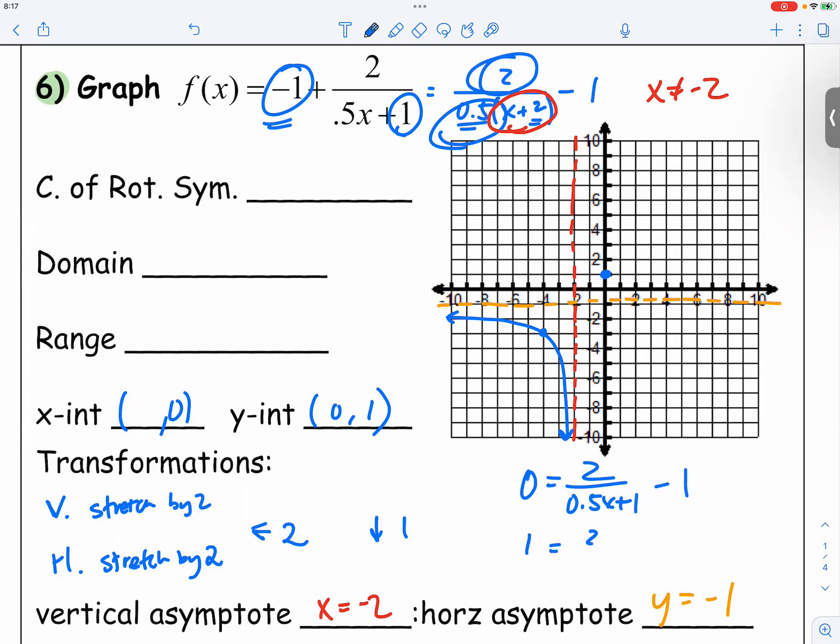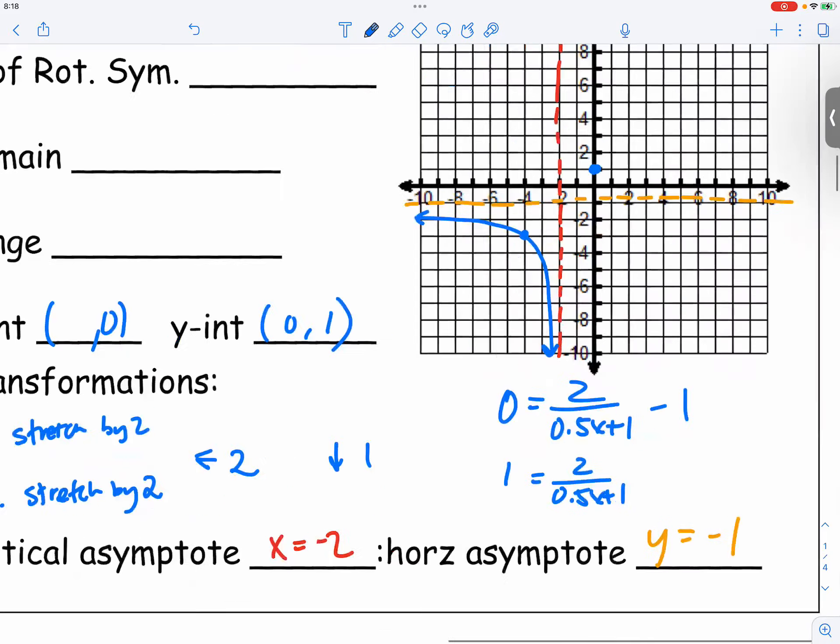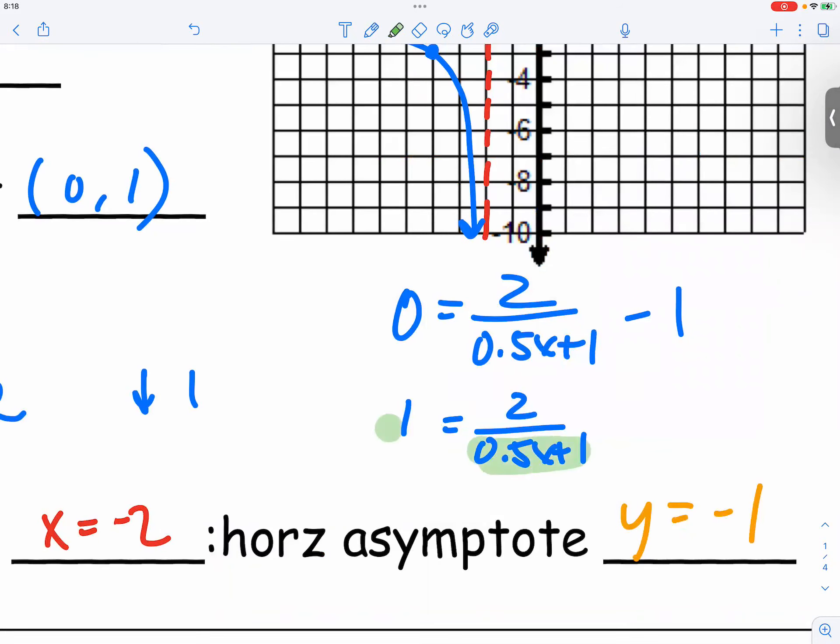Okay. So we're going to move the 1 over. So again, I'm going to multiply both sides by 0.5x plus 1. So 0.5x plus 1 times 1 is by itself. It's equal to 2.